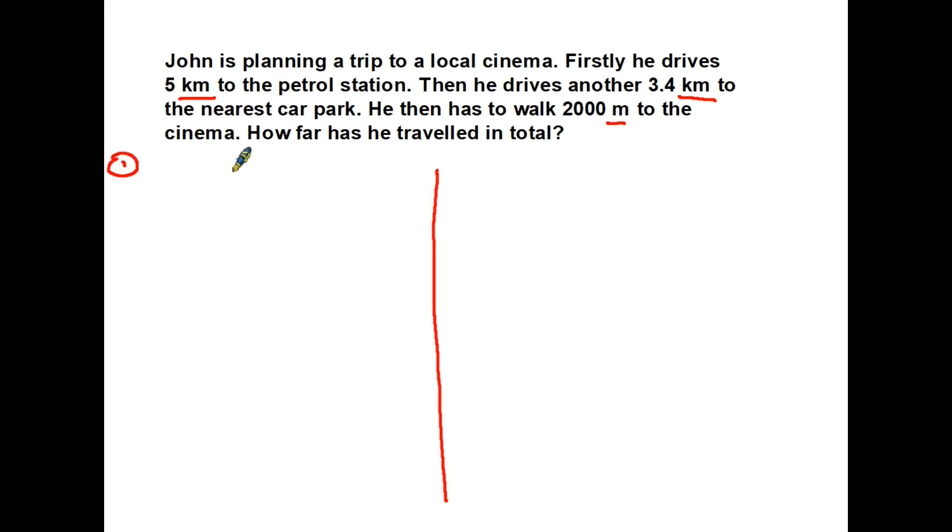Method 1. We know that the first measurement is 5 kilometres. We also know that he then travels another 3.4 kilometres. Now in order to make them all the same in this instance we're going to convert the metres. So we have 2,000 metres. Now we know there are 1,000 metres in a kilometre. Therefore we have to divide by 1,000 to get to kilometres. 2,000 divided by 1,000 is 2. So 2,000 metres equals 2 kilometres. Therefore if we add the 2 kilometres on there we find that in fact he has travelled 10.4 kilometres.